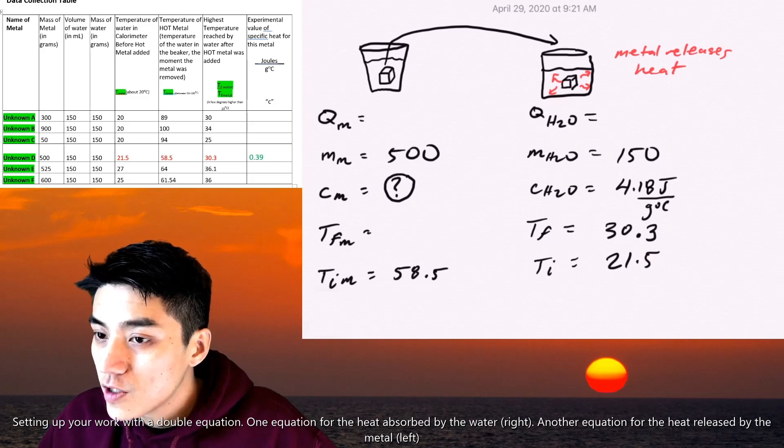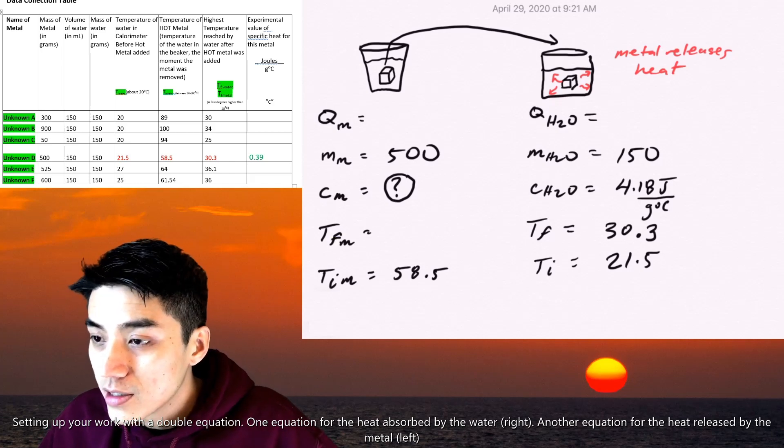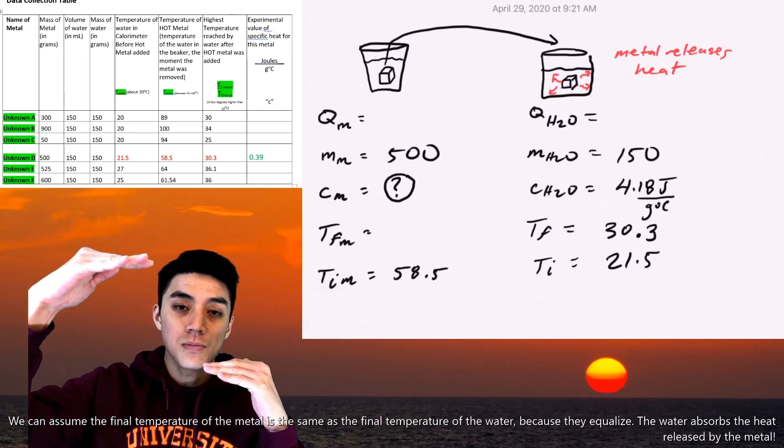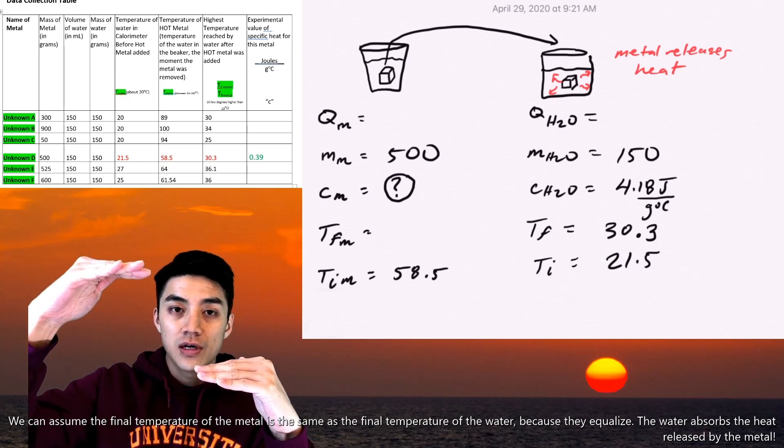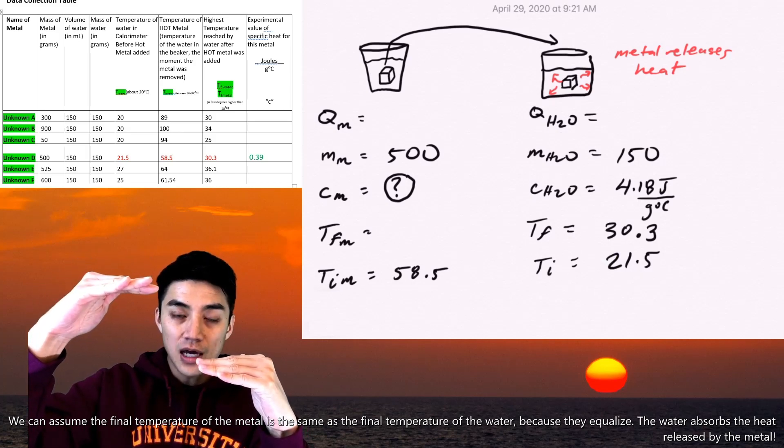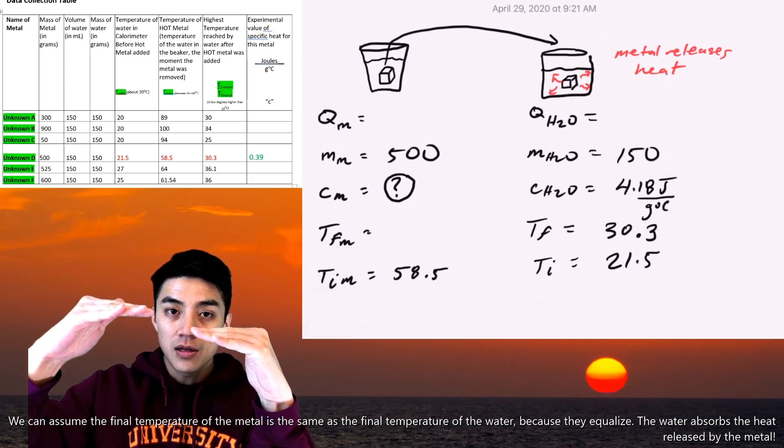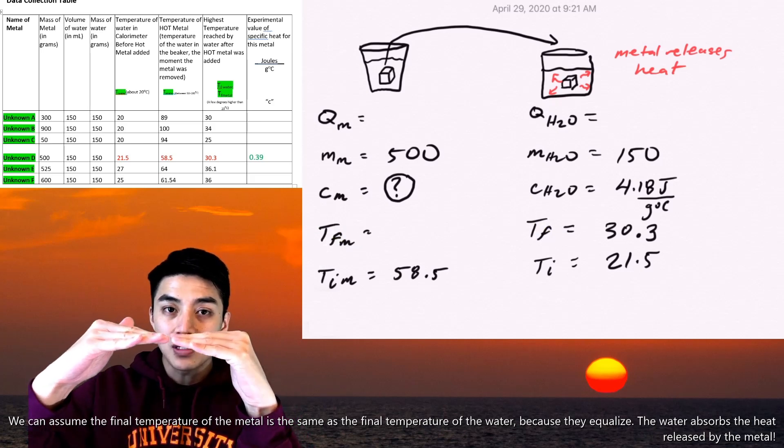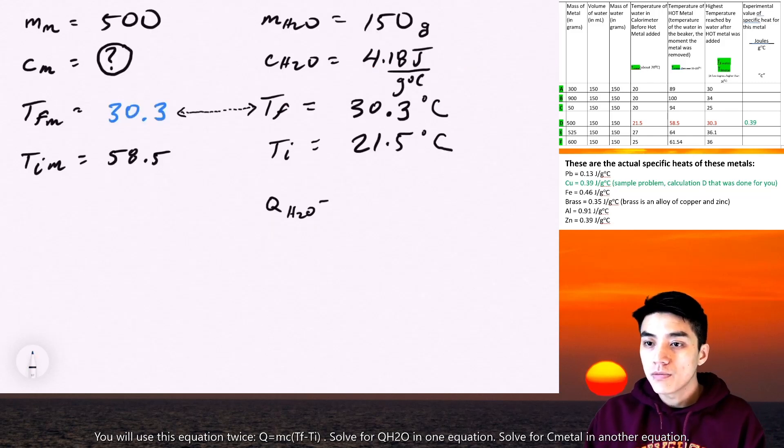Now, there's one assumption you can make. Okay, so T final of the metal on the left there, is also 30.3. It's kind of like this. The metal is initially at 58.5 degrees Celsius and the water is here at 21.5. So when you put the metal inside the calorimeter, the water heats up to 30.3 and the metal also equalizes and they both meet at 30.3 for their final temperature. I plug in 30.3 degrees Celsius for T final of the metal. Then I come back to the right hand side.